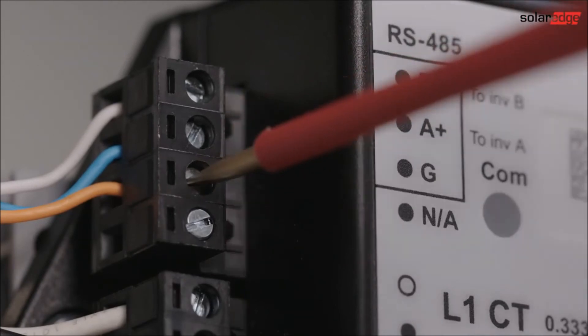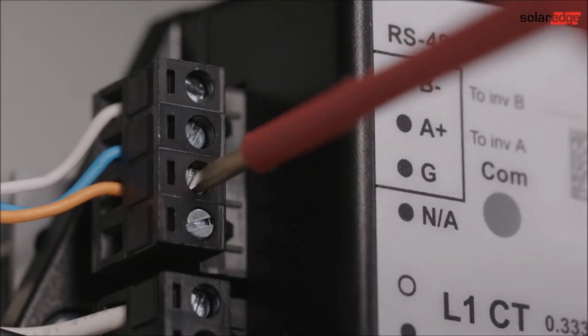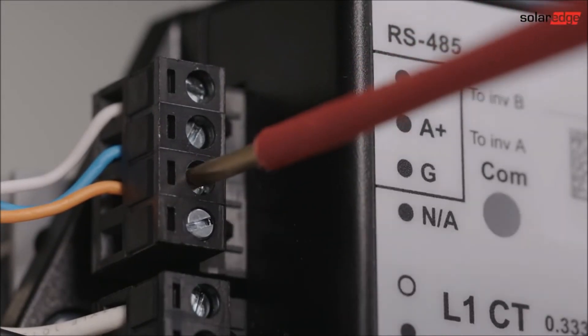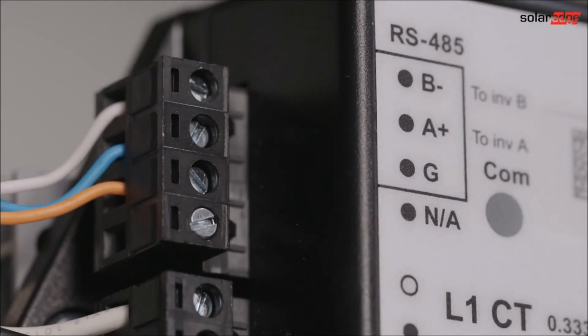Next up is the connection of the RS485 bus. We recommend using a CAT5 cable. A twisted pair must be used for terminals B and A between meter and inverter. We recommend using the white and blue wires. For the G terminal any other wire can be used. We recommend using orange.